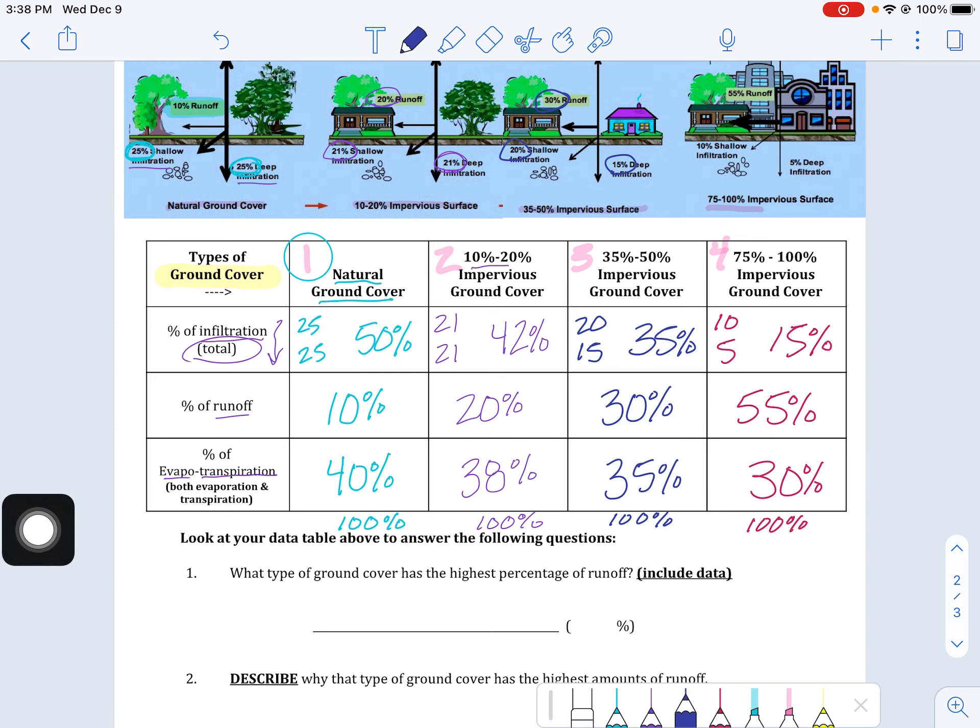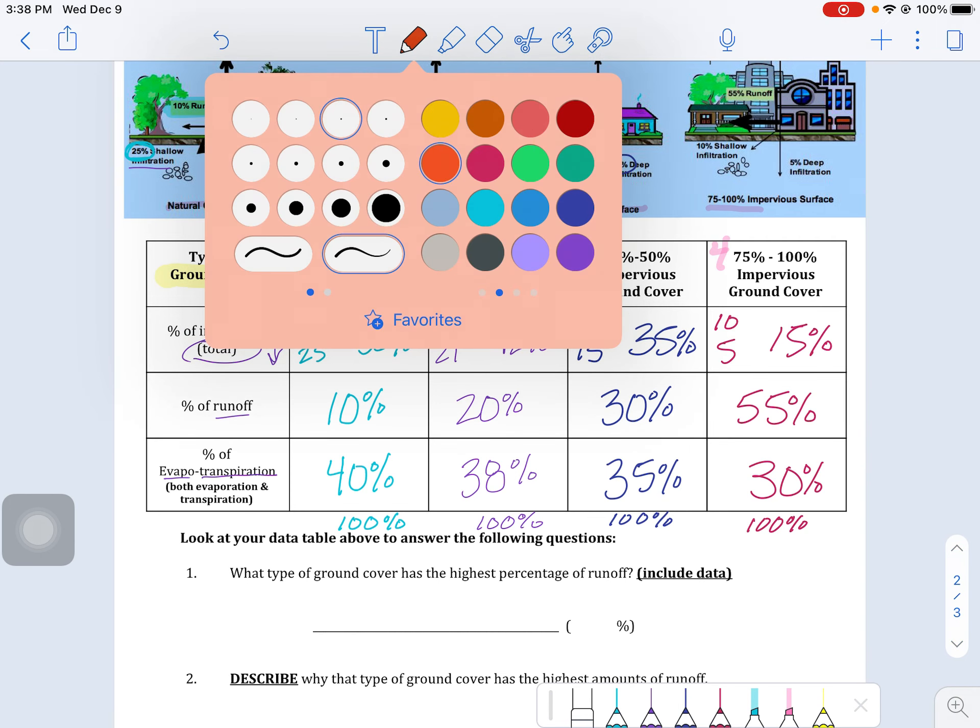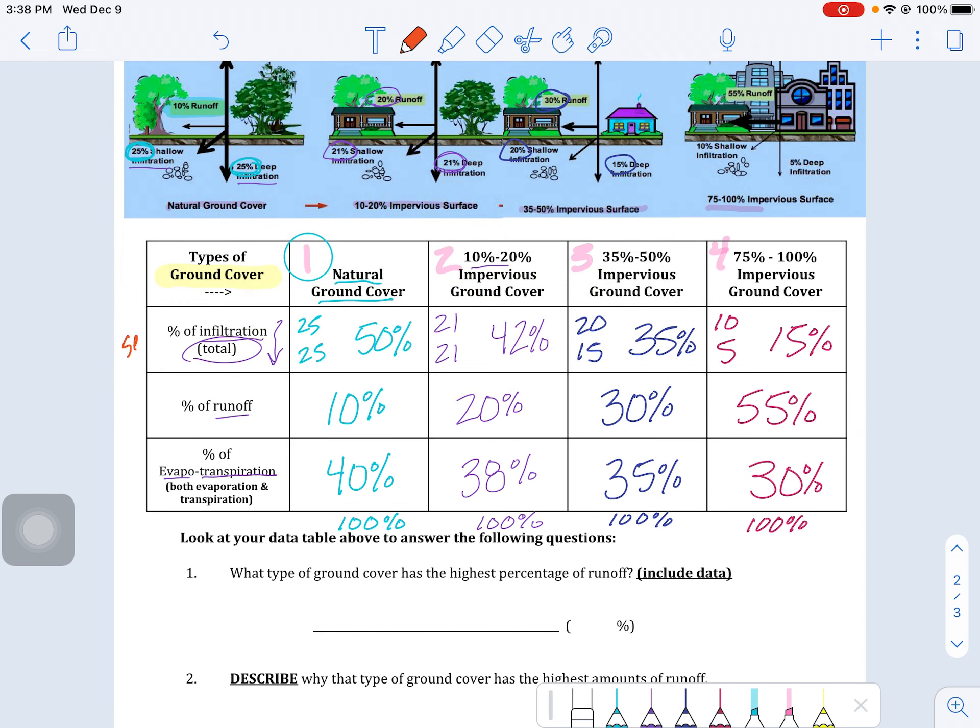So infiltration, again remember that is water seeping down into the earth. Runoff is moving across the surface, and then our last one, evapotranspiration, that was a combination of evaporation and transpiration. So that was water going through that phase change of liquid to a gas and moving up into the atmosphere.